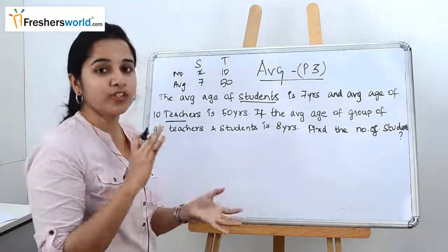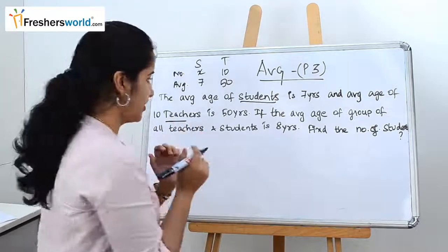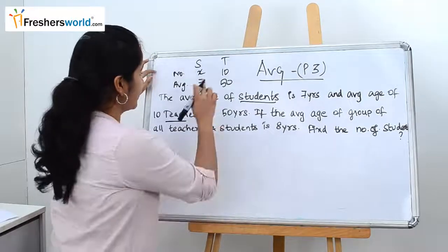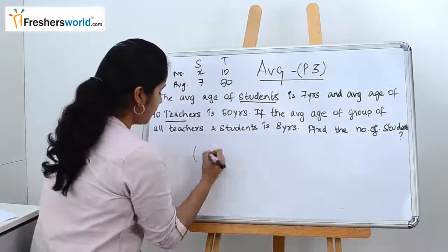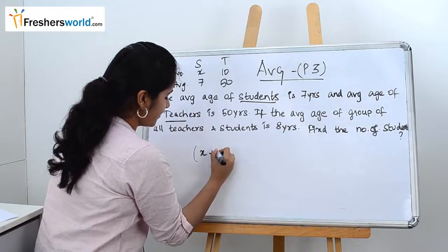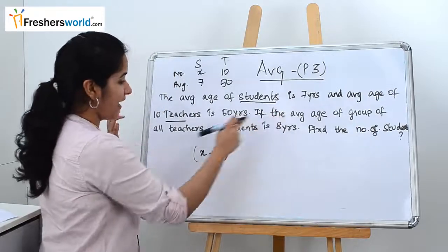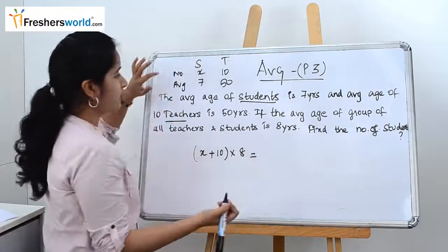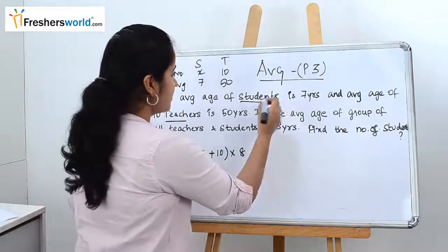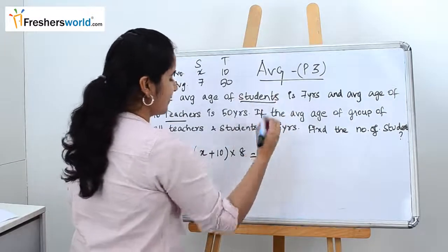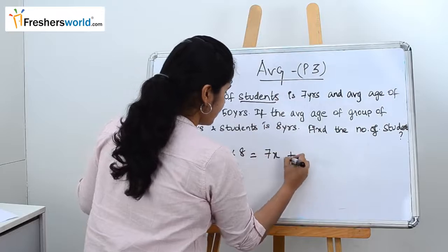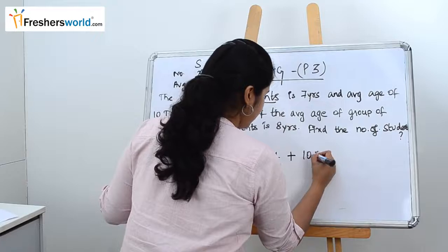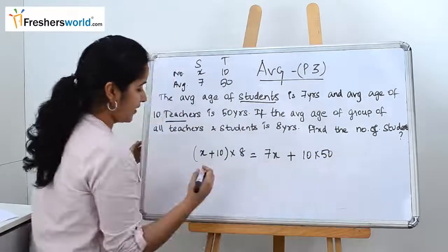We don't know the total number of teachers and students, so we take it as x plus 10, and the overall average is 8 years. Forming the equation: (x + 10) into 8 equals 7 into x plus 10 into 50.